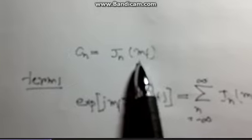We know that the Bessel function can be expressed by this formula, which is absolutely equal to this term cn. And the term here is the same. So we can evaluate as cn is equal to Jn(mf).